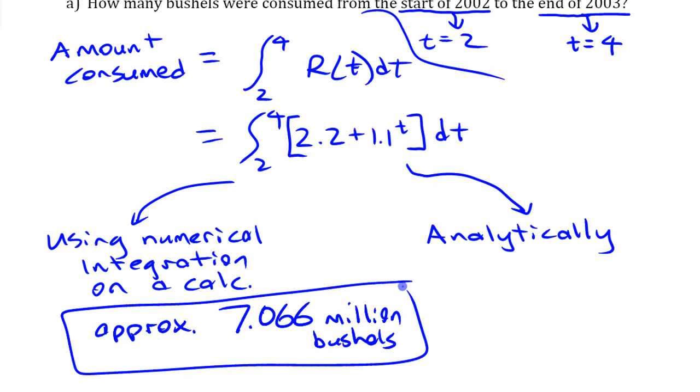As I said, you can do it analytically if you use an antiderivative of that function. An antiderivative of that function is just 2.2t plus 1.1^t divided by ln(1.1). We have to evaluate it for those two values.